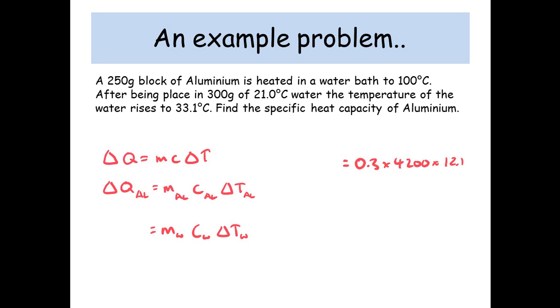Now, the specific heat capacity of water is 4200. So the mass of the water is 300 grams, which is 0.3 kilograms, times by 4200, times by 12.1.